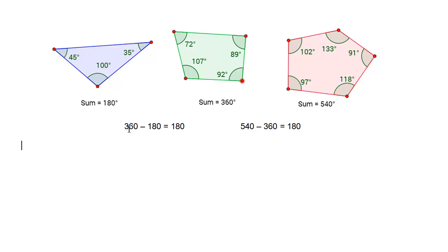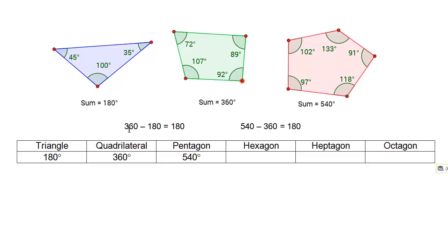Can you find the sum of the interior angles of a hexagon? Take the 540 from the pentagon, add the common difference of 180 degrees, and you get the hexagon's value.